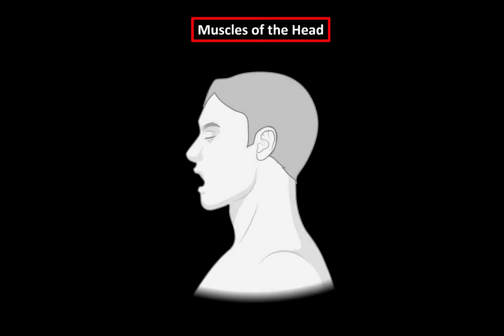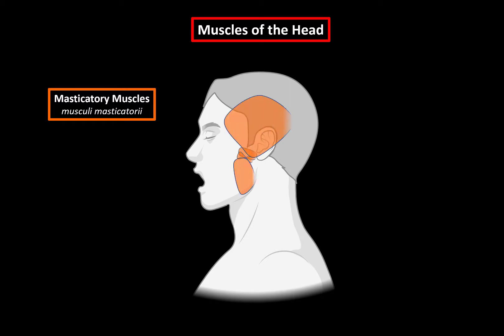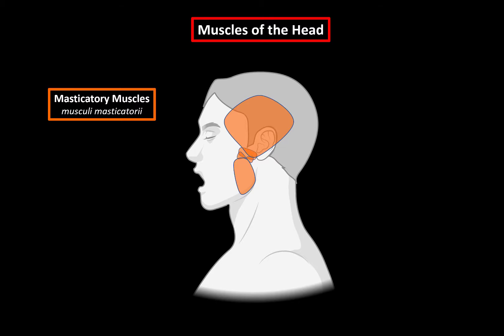All muscles of the head are divided into two groups. The first group is the muscles of mastication — mastication means to chew, so those are the muscles responsible for chewing when you're eating. And the second group are the facial muscles, or the muscles responsible for facial expression.